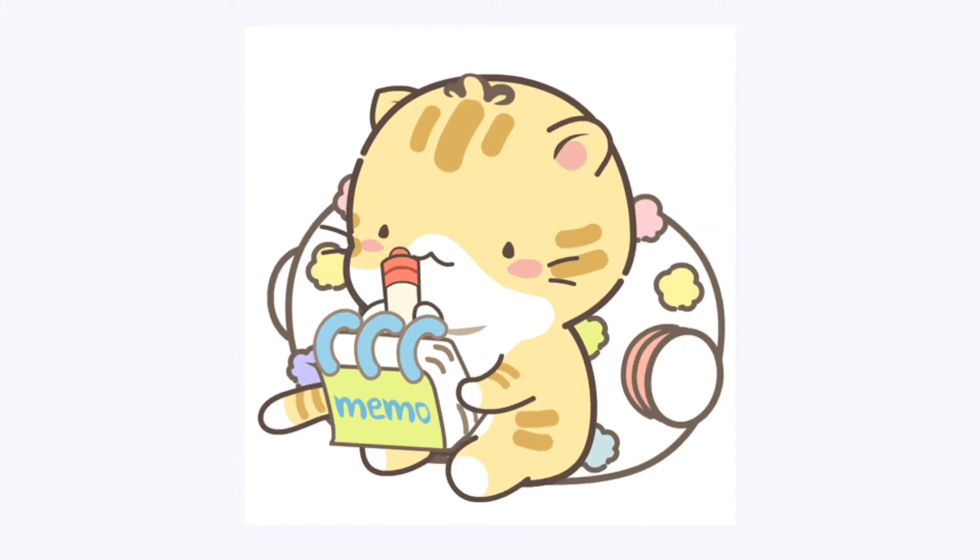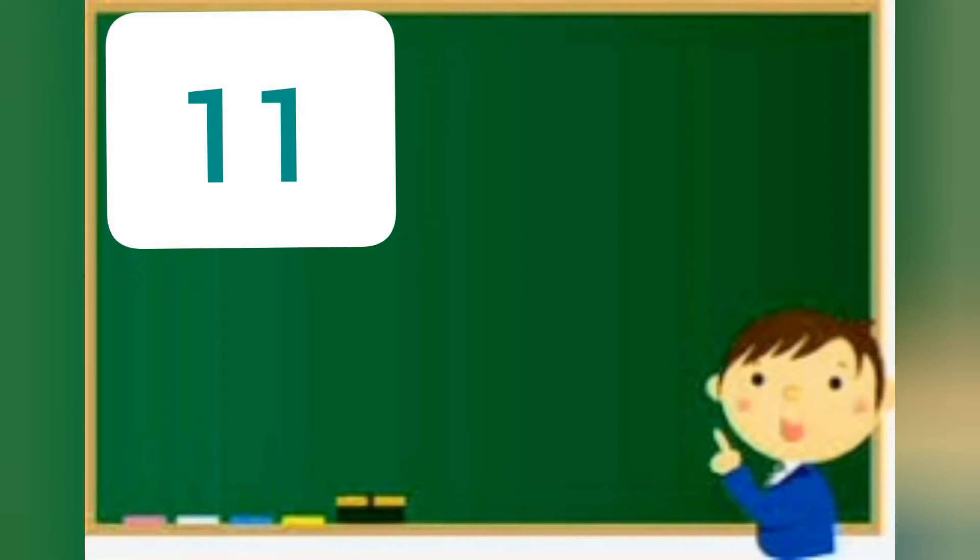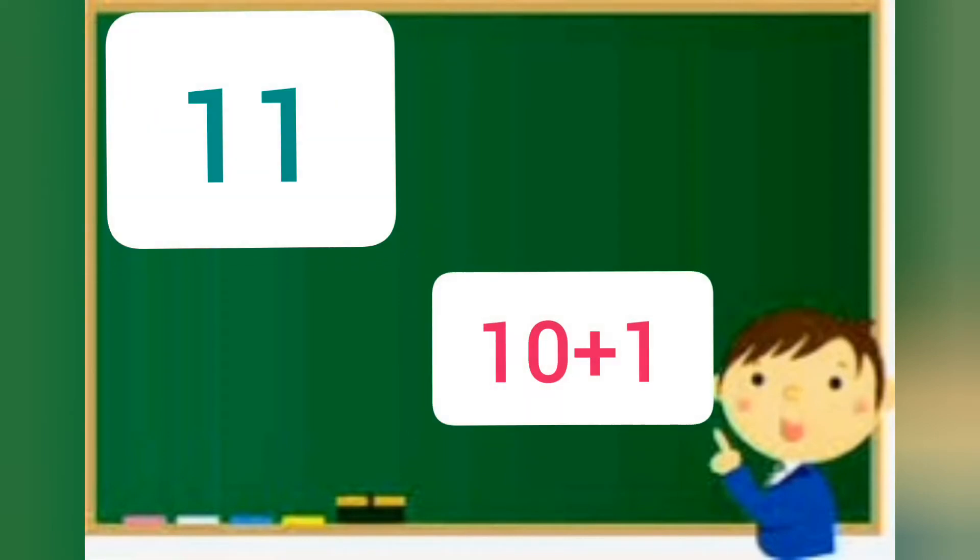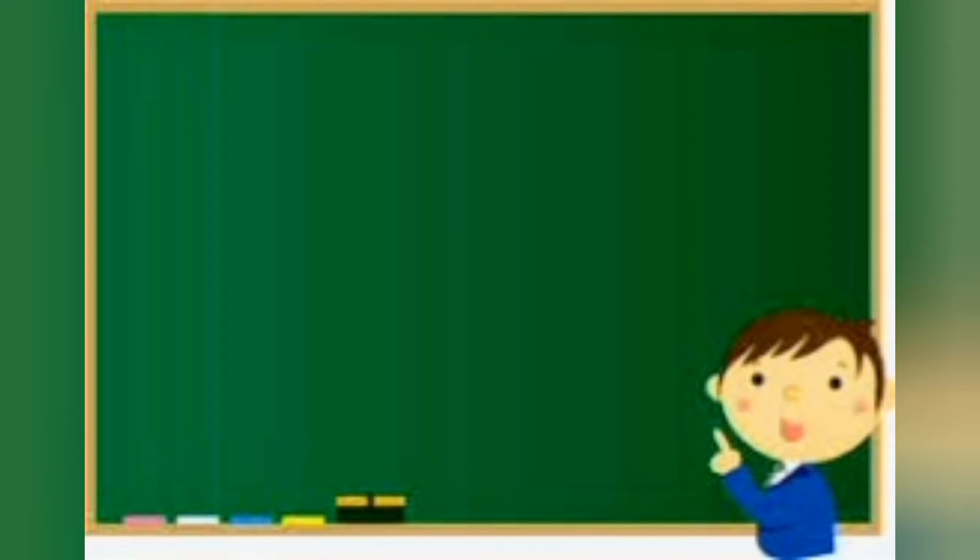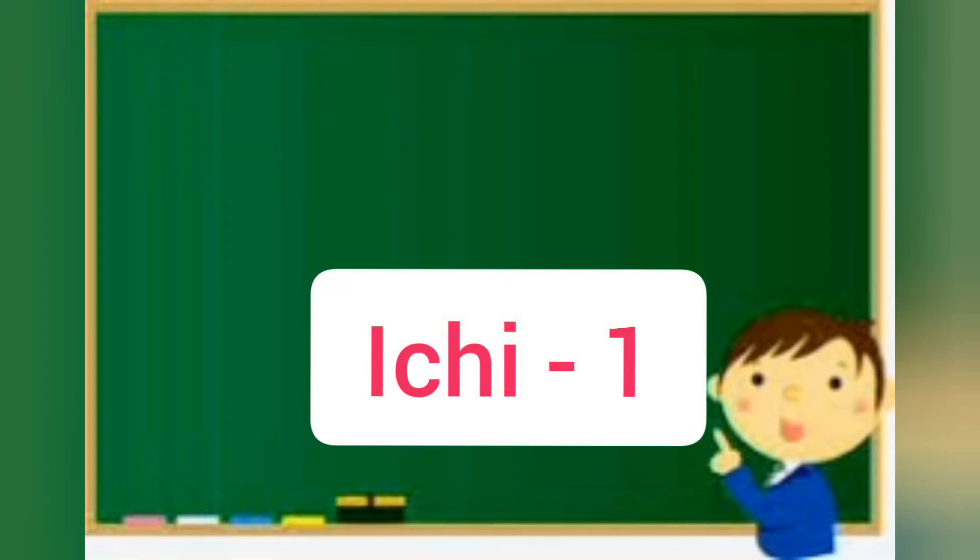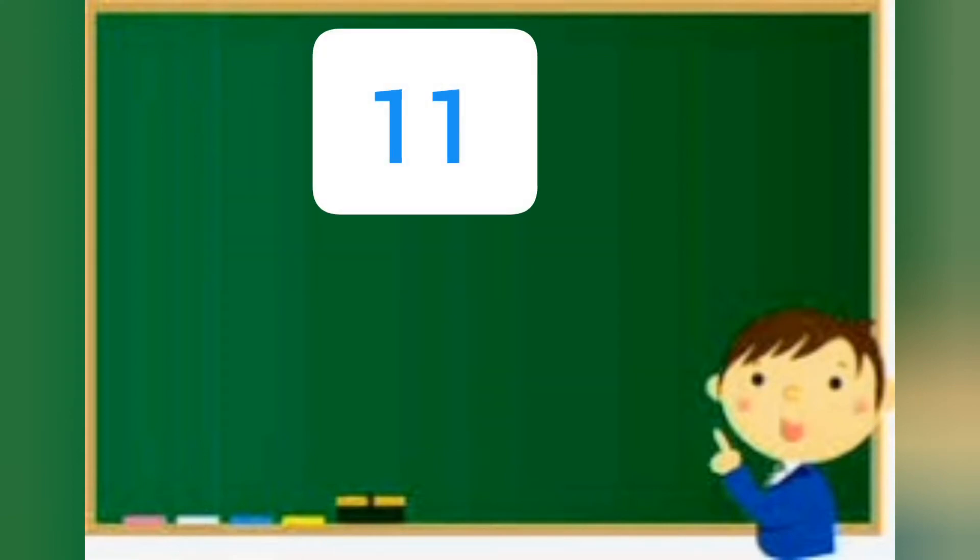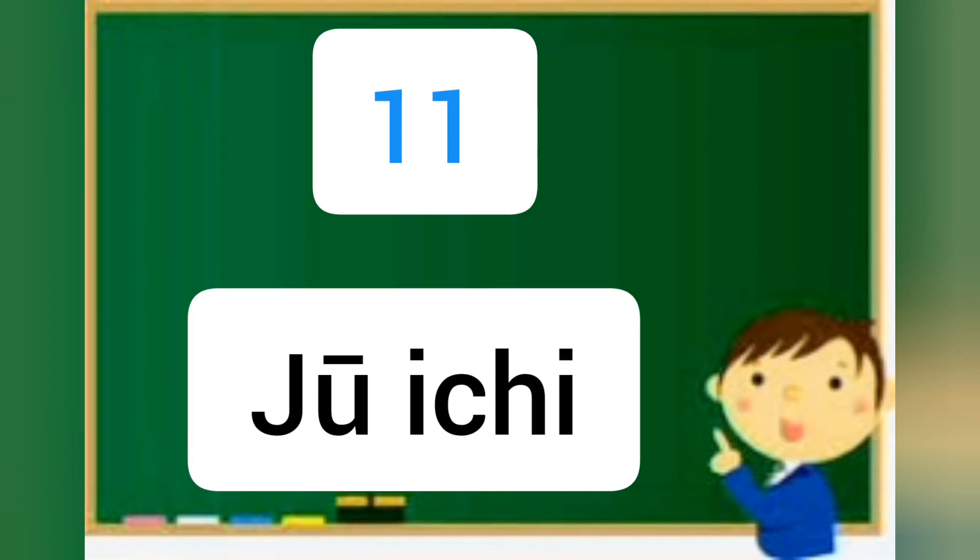In Japanese, number 11 formation we take as 10 plus 1. So here, all we need to do is replace the correct Japanese word to the correct number. We call ju for number 10 and ichi for number one. So 10 plus 1, we get number 11 in Japanese: ju-ichi. Ju-ichi literally means number 11.